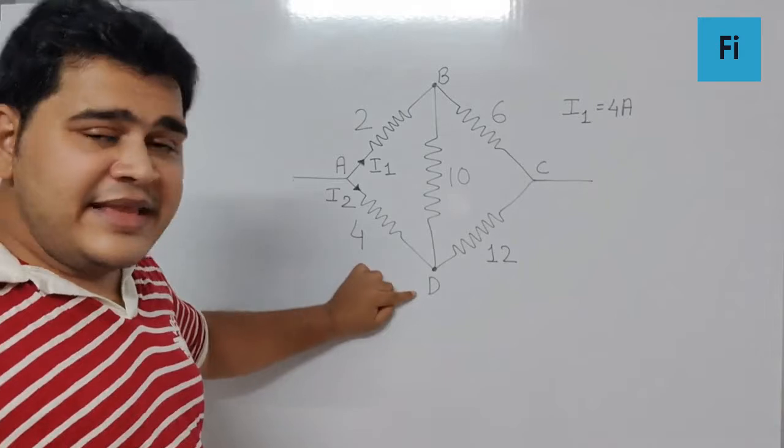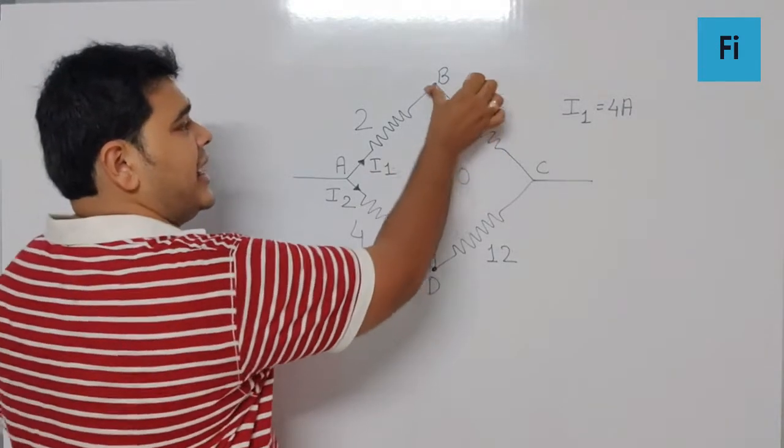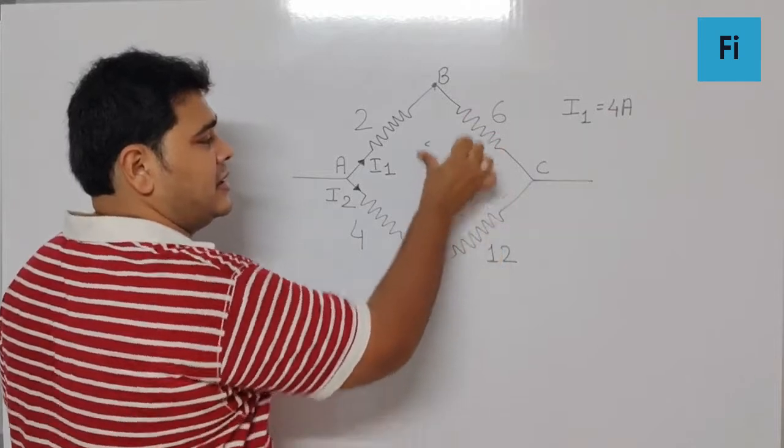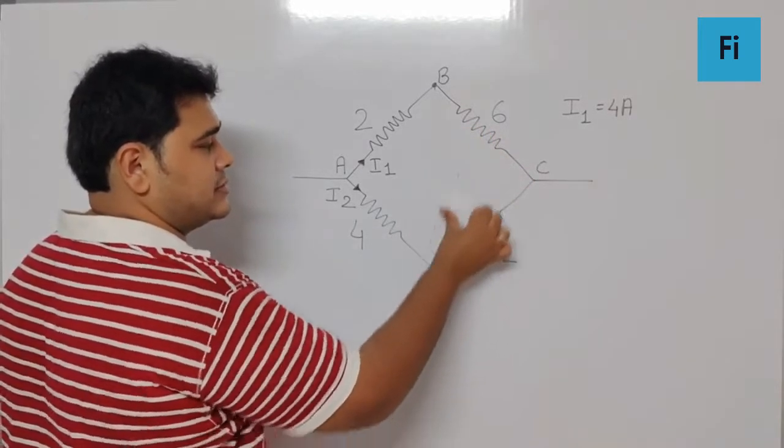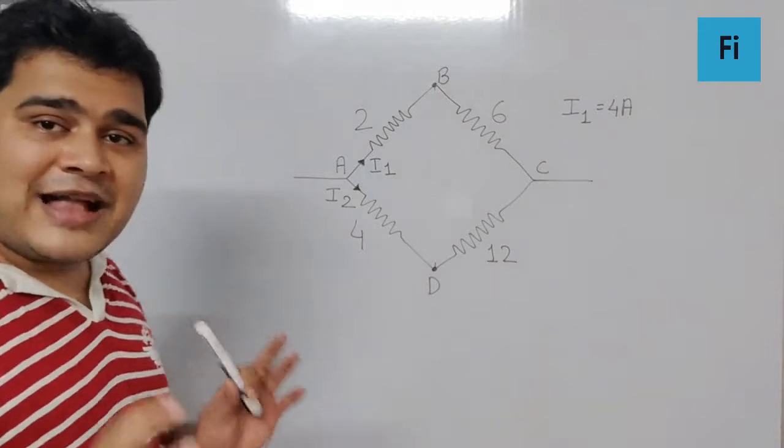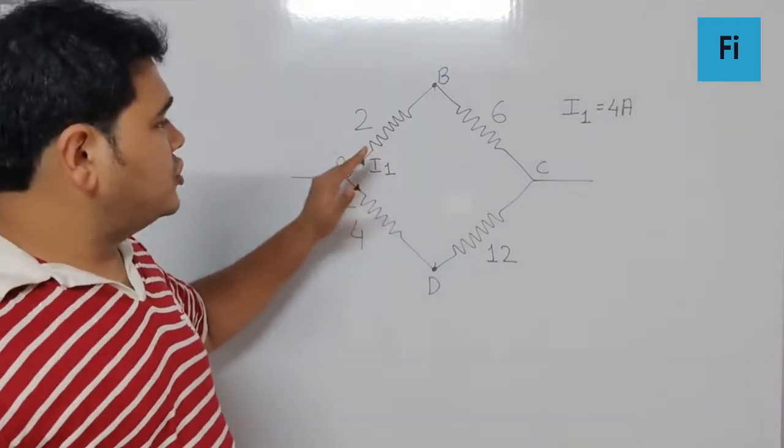point B and D will be same, or you can say potential difference will be 0. That means I can definitely remove this 10 ohm resistance, and that means I can say 4 ampere current will pass through the 2 ohm as well as 6 ohm.